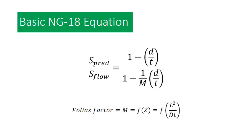Here's our basic NG18 equation. You've got a predicted failure strength divided by a flow strength, and then you've got one minus d over t, where d over t is the flaw depth ratio — the flaw depth of a corrosion flaw divided by the wall thickness. And then you've got one minus one over M times d over t again. That M is your Folias factor, and the Folias factor is a factor based largely on length — it's a function of length squared divided by diameter and wall thickness. Those of you familiar with ASME B31G or DNV F101 will know that there are different shape factors you can put in front of those flaw depth ratios to approximate either elliptical or parabolic flaws, and there are different versions of the Folias factor or the flow strength definitions.